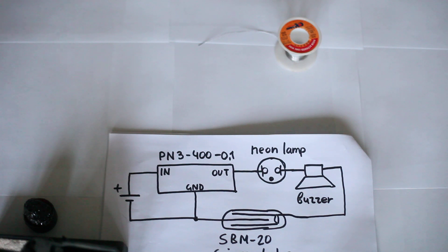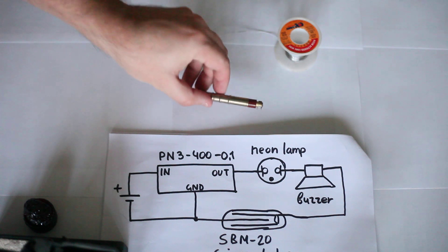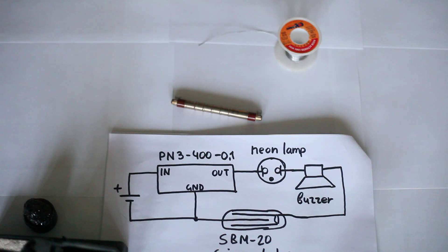Now I'll show you how to power up a Geiger tube with a 400 volt converter. I use the Geiger counter, neon lamp, voltage converter, a small buzzer, lithium battery, and some wires.